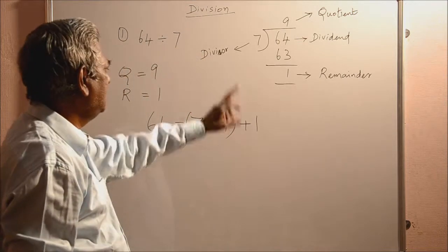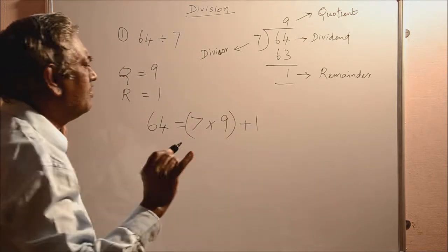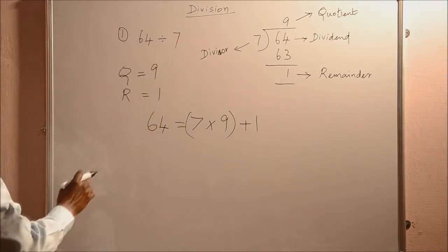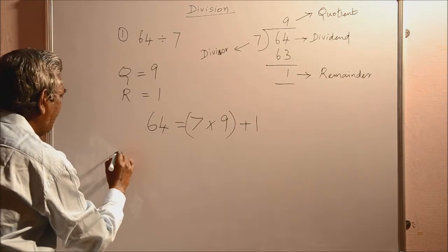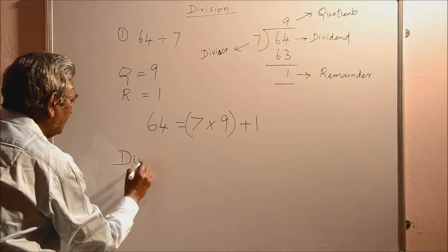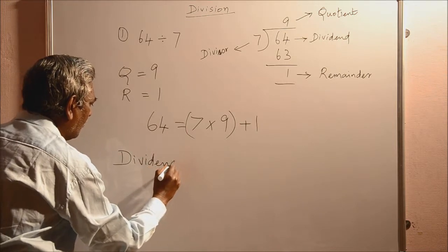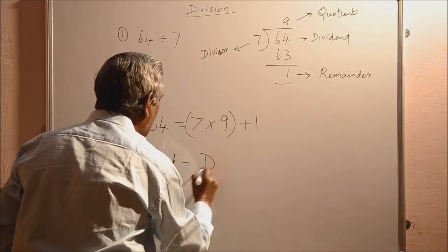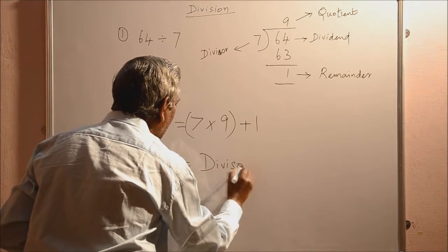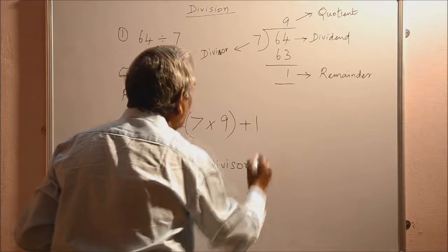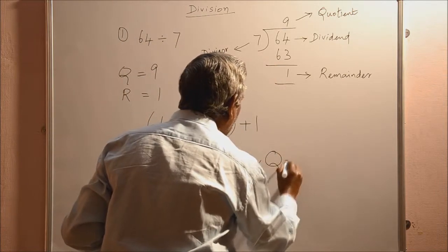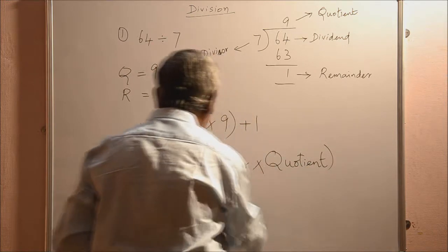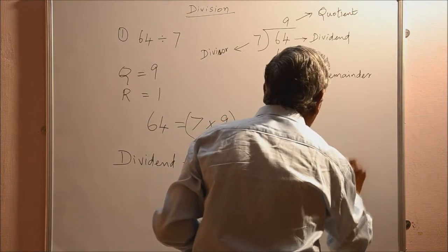See, 7 nines are 63, then plus 1, 64. So, just write those names for these things. 64 is simply dividend. That is equal to 7 is the divisor. Divisor into, this 9 is the quotient. Quotient. Put the bracket here. Then, plus this remainder.